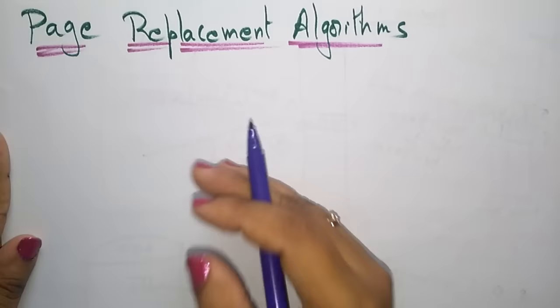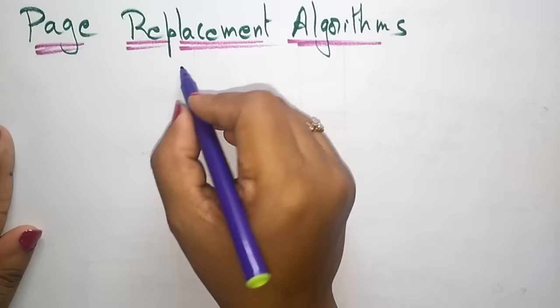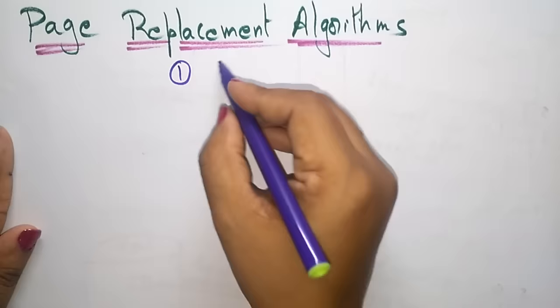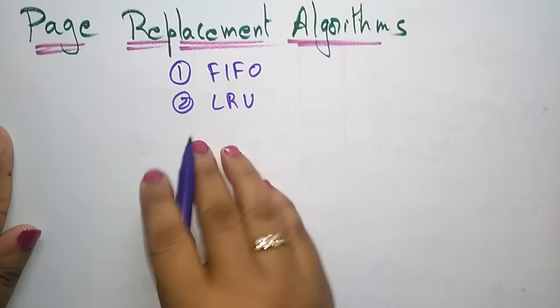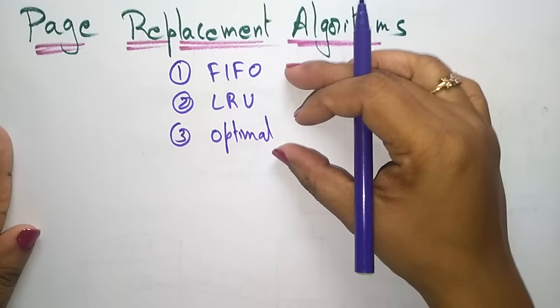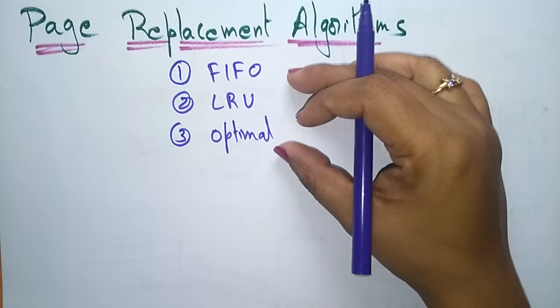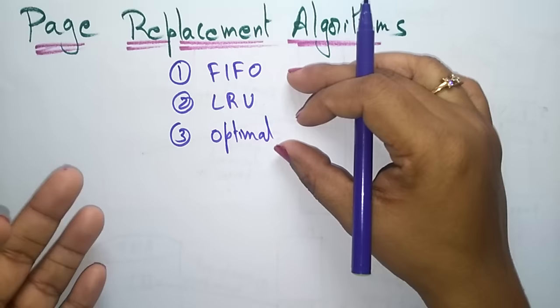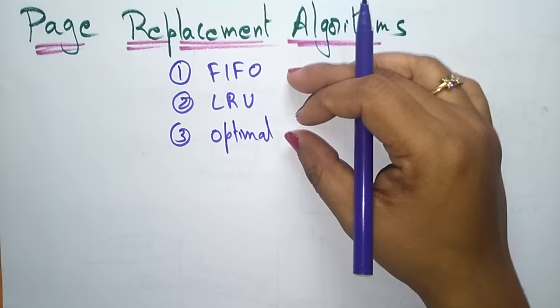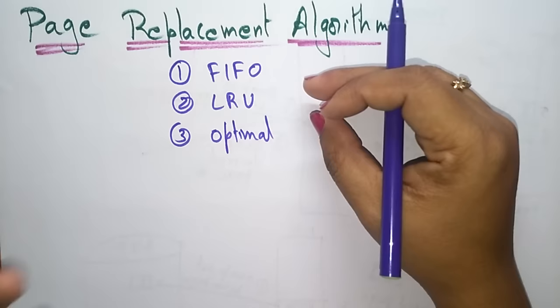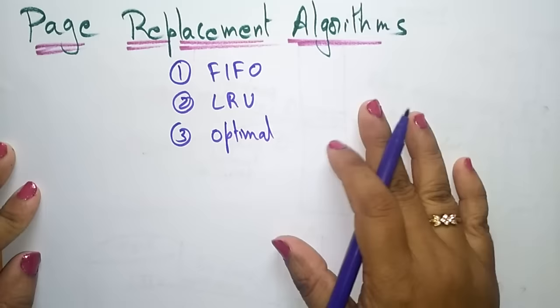There are three different algorithms used in page replacement: one is FIFO (First In First Out), then Least Recently Used (LRU), and the Optimal algorithm. We use these three different algorithms to find out which replacement algorithm causes the least page faults and errors. Hit ratios and miss ratios can be calculated, and based on those values we can select the best algorithm.